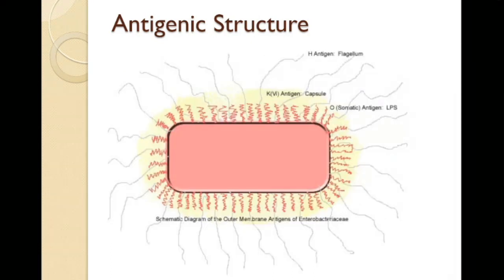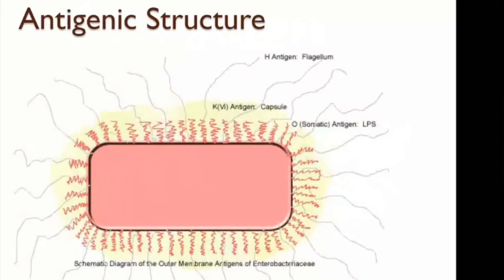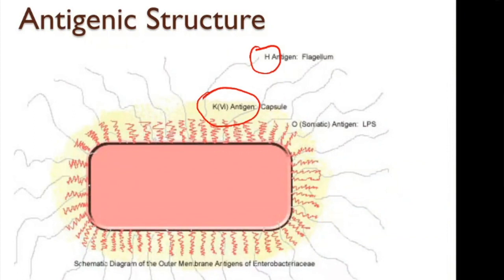The K antigen is particularly heavy in Klebsiella because Klebsiella has a capsule. The H antigen, being flagellar, is only found in motile enterics. Bacteria such as Shigella, Klebsiella, and Yersinia do not have the H antigen because they lack flagella. The O antigen came from the lipopolysaccharide cell wall; the H or V antigen came from the flagella or capsule.